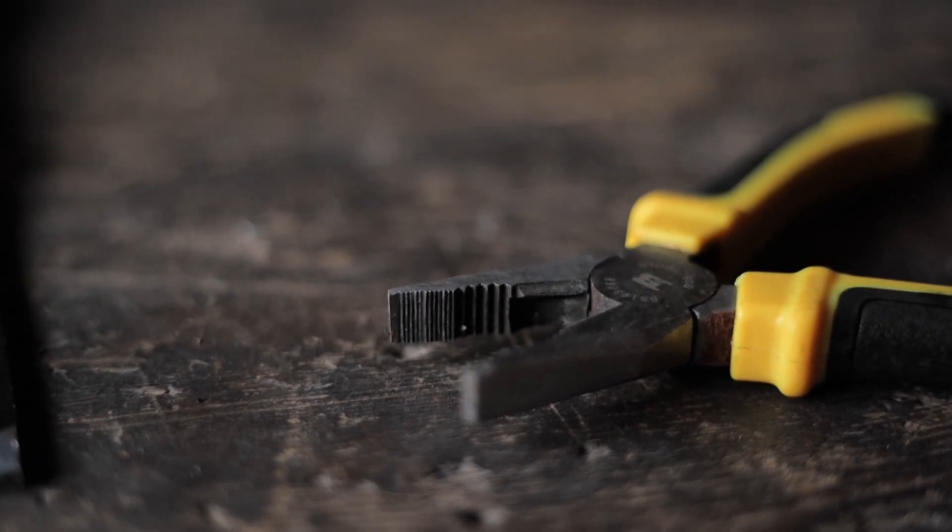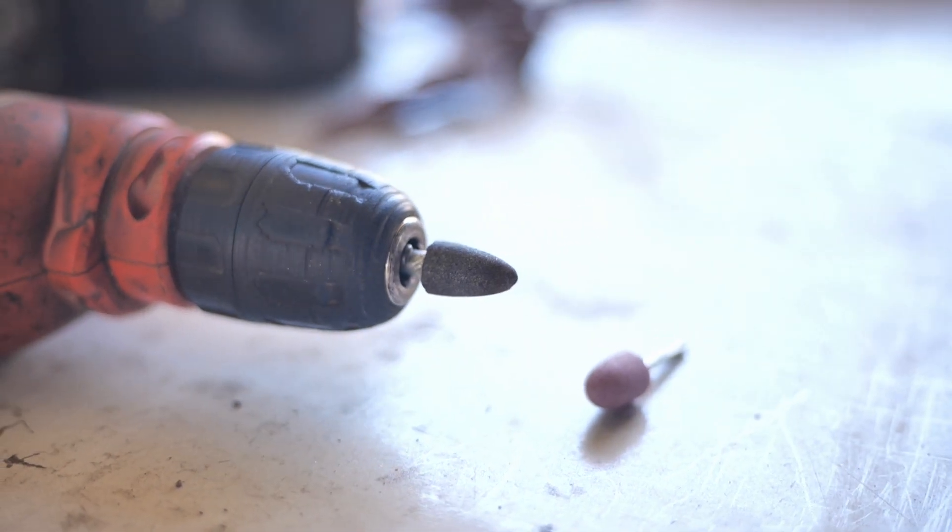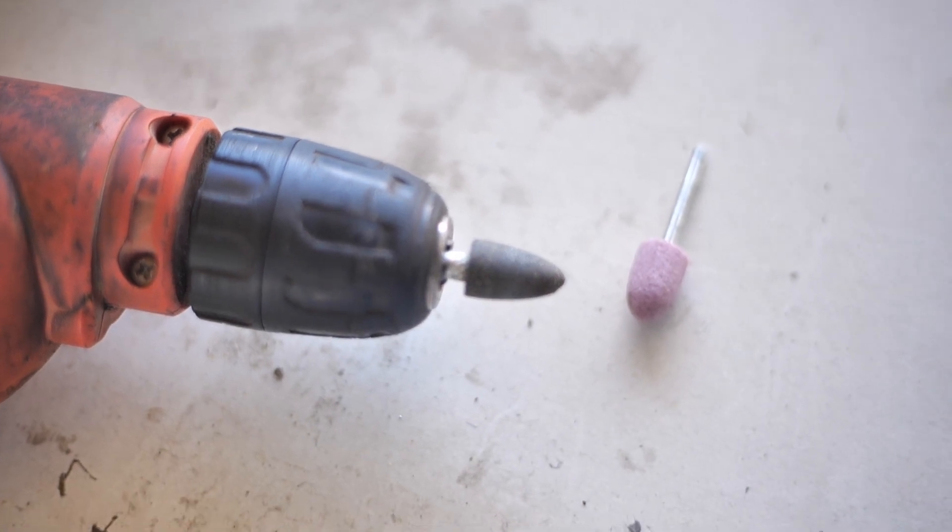But if you want to sharpen the round and angular sides of your plier or cutter, you can use a rotary grinder. They come in different sizes and can be adjusted on the tip of your drilling machine quite easily.